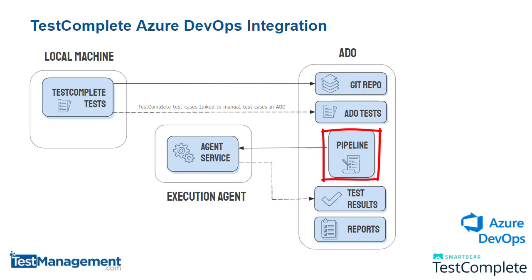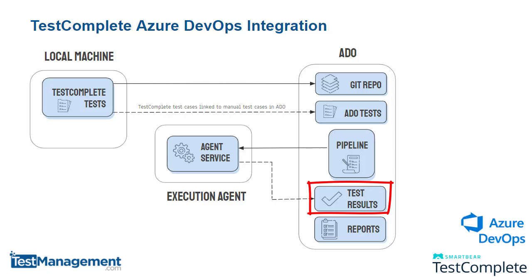When we run the pipeline, it deploys the tests to an agent machine where there's an agent service running that is responsible for running TestComplete or TestExecute, executing the tests, and then capturing the test results and feeding them back to Azure DevOps. Those test results are recorded against the manual test cases we've already defined in ADO so that we can report on those tests within the Azure DevOps interface.